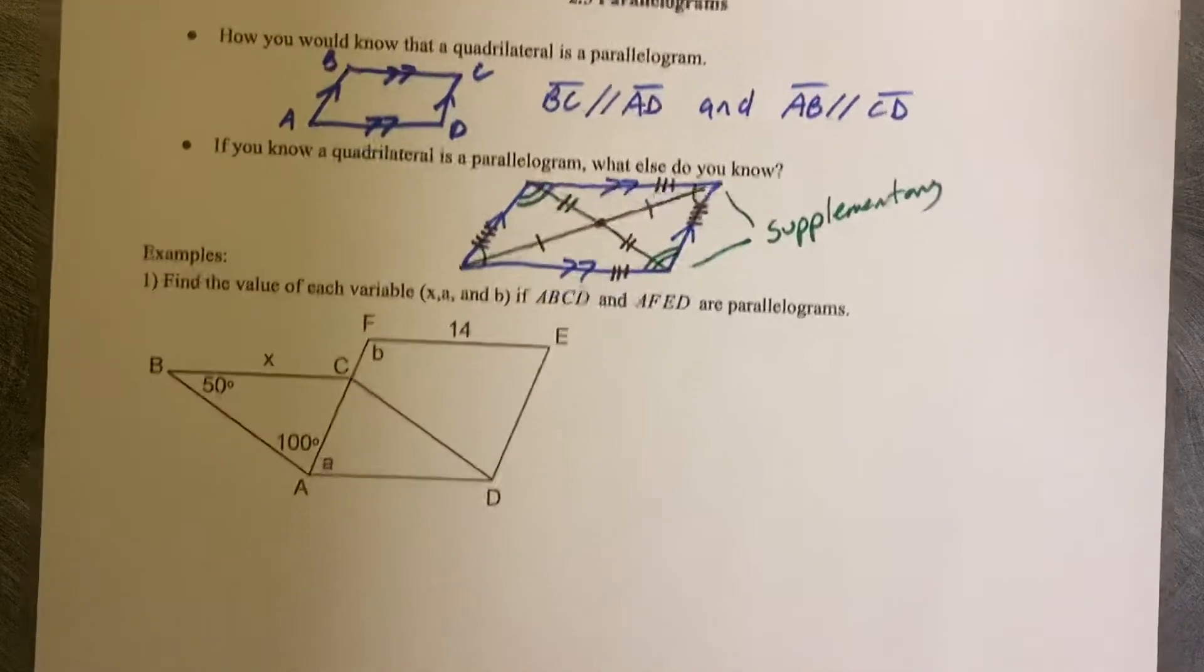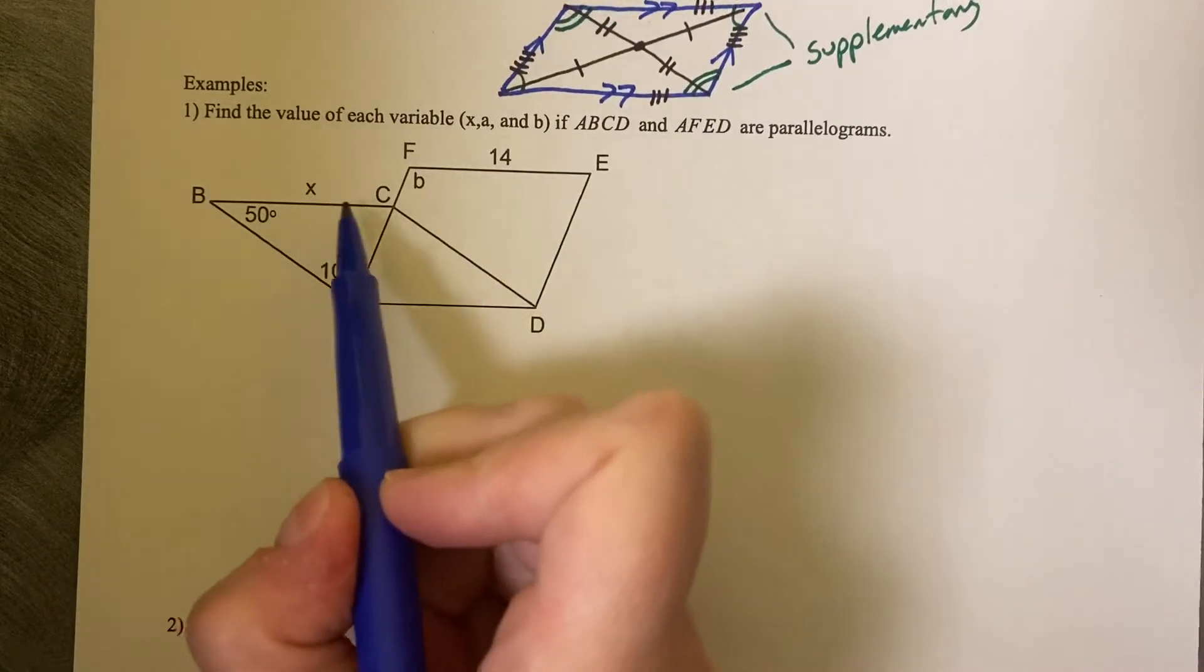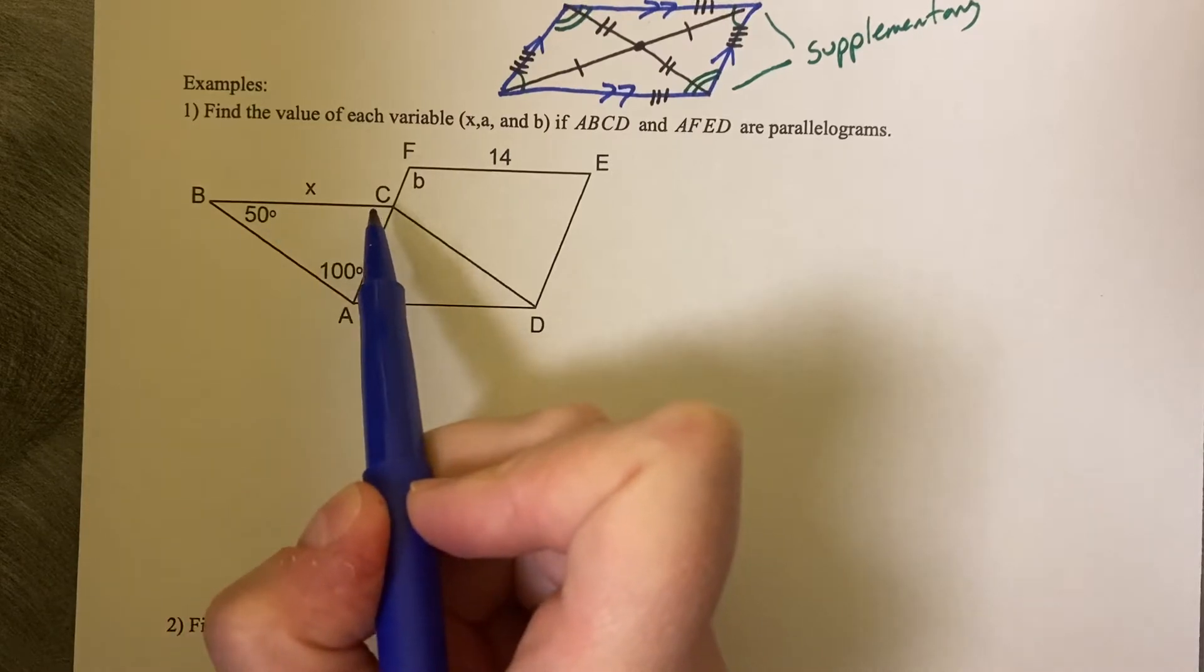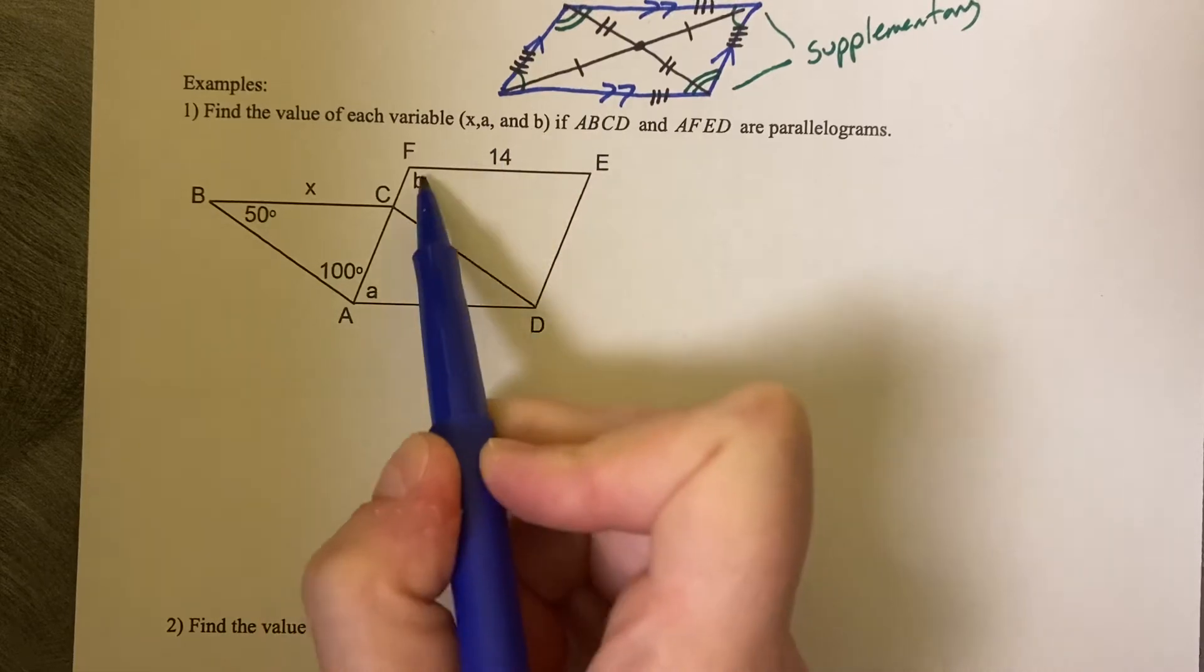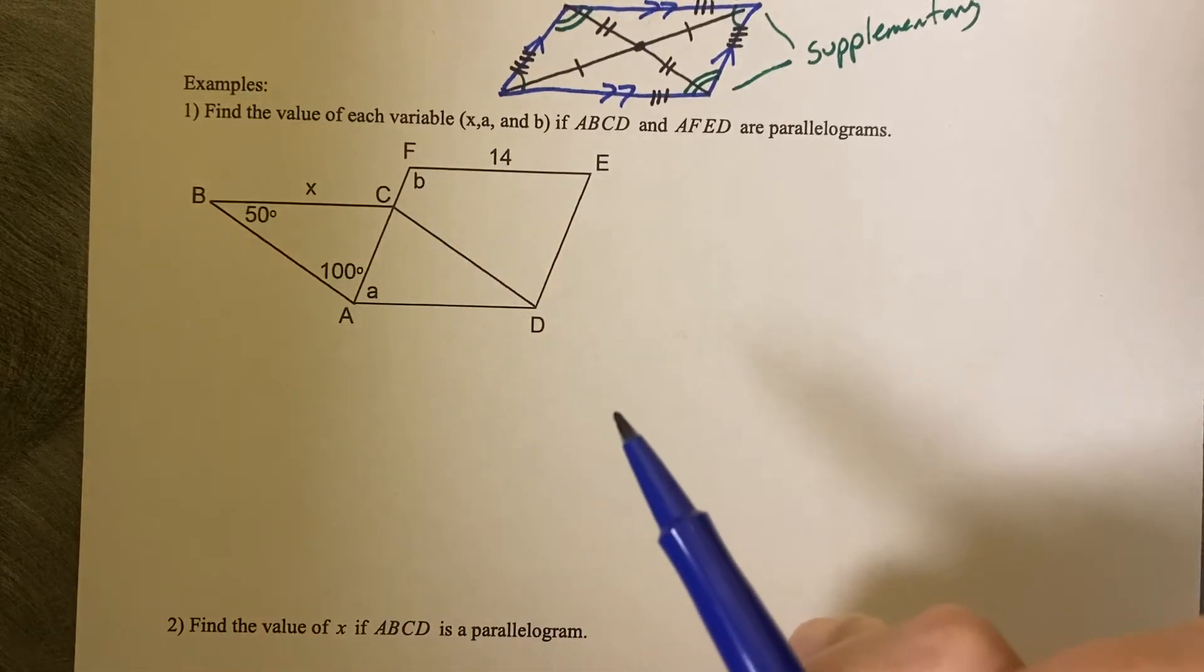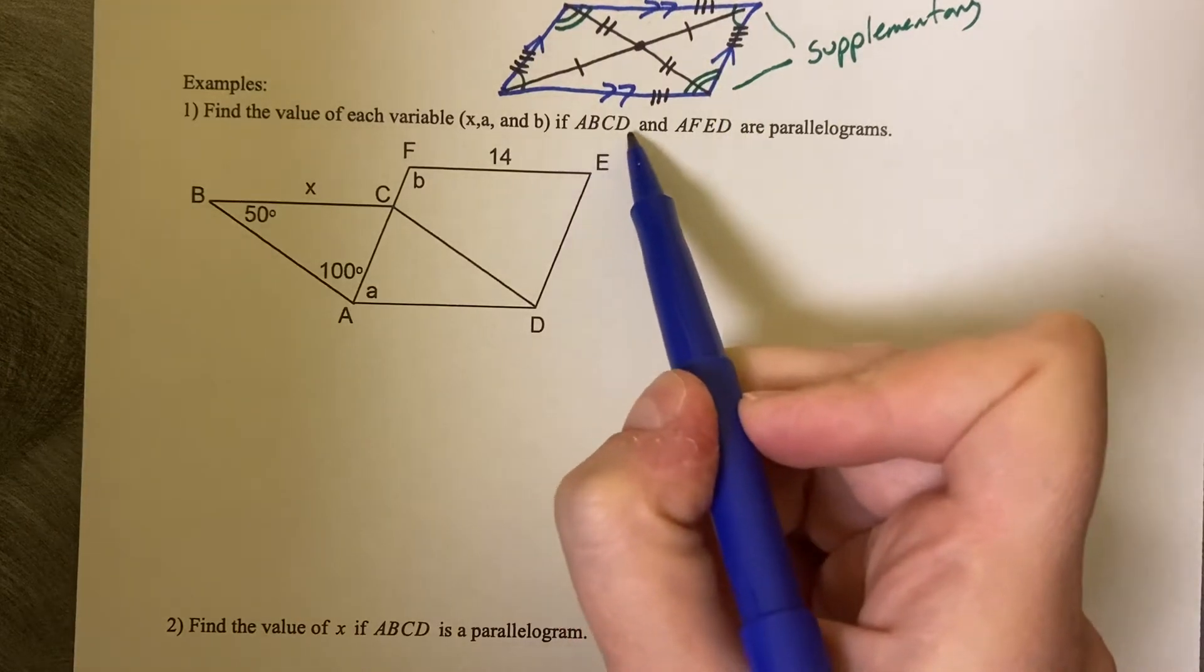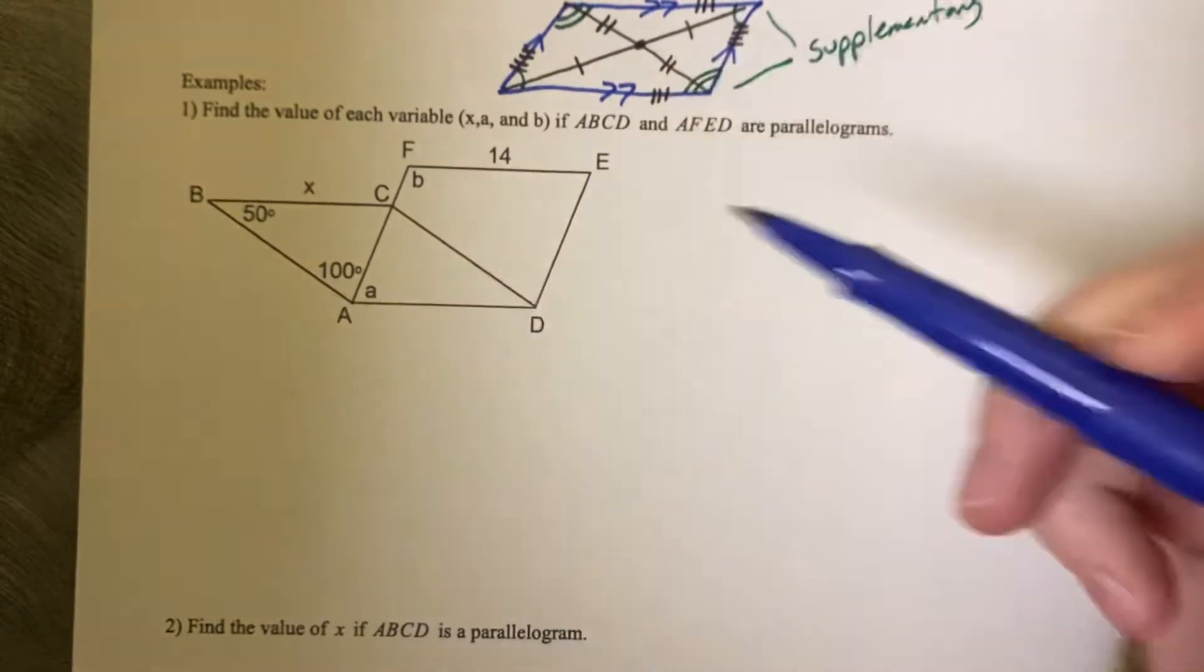So let's take a look at this example. It says find the value of each variable X, that's a side length BC. I want to know about this angle A in the corner here, and I would like to know about this angle B in the corner here. So we're going to get two angles and a side length. And what they're saying is that ABCD, so that's this guy, this guy, ABCD.